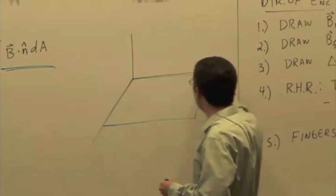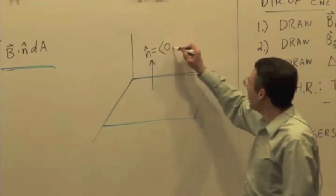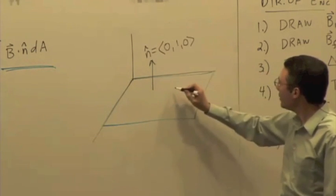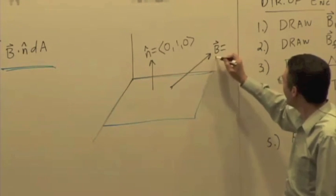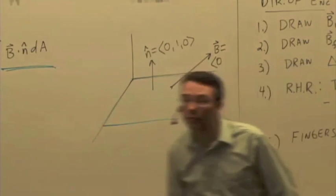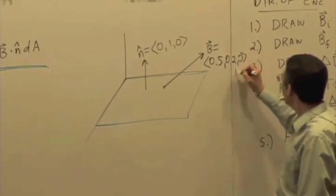And axes, N hat. N hat then would be 0, 1, 0, right? And so, if you're looking at the magnetic field equal to, what was it, 0.5, 0.2, 0? Tesla.